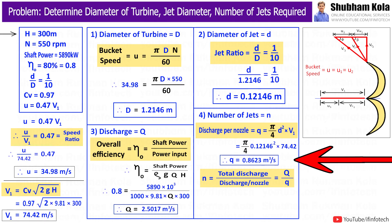Therefore, discharge per nozzle q we got as 0.8623 meter cube per second. I will substitute this value to calculate number of jets required, that is small n.